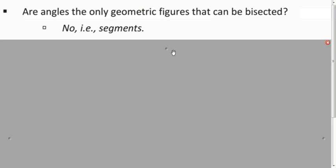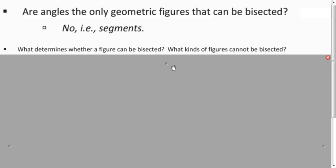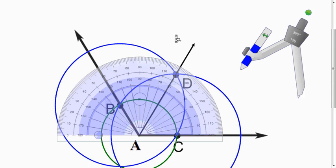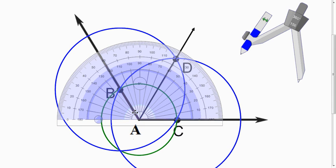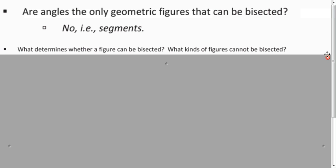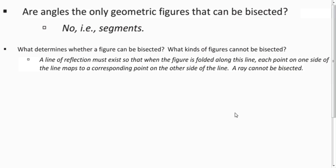You can cut a segment in half, right? So the answer to the question is no, because you could also have segments. So if you can bisect something, both halves have the same size. That means that you got to be able to flip it over onto itself, kind of like a reflection.